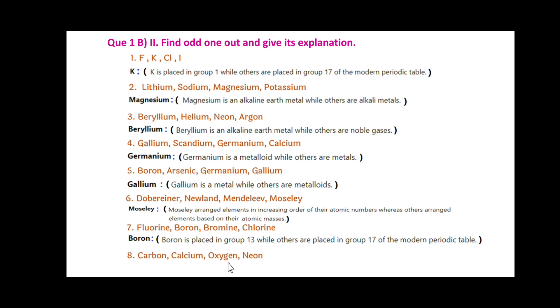The 8th one is: Carbon, Calcium, Oxygen and Neon. Friends, here Calcium is the odd one out. Because Calcium is an S-block element, while others — Carbon, Oxygen and Neon — are P-block elements.